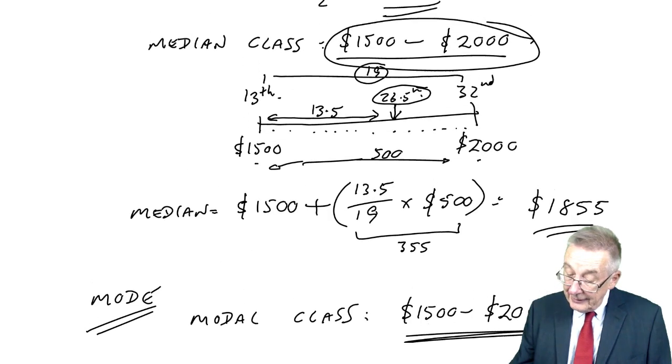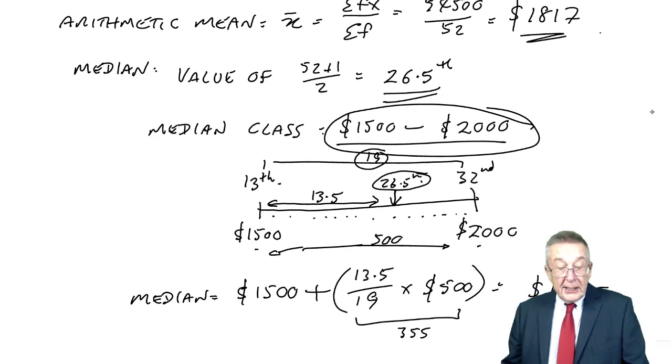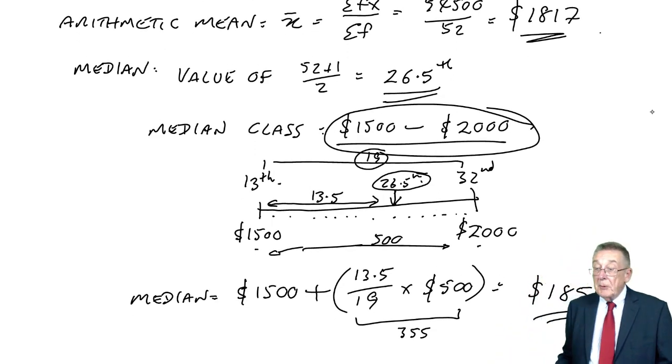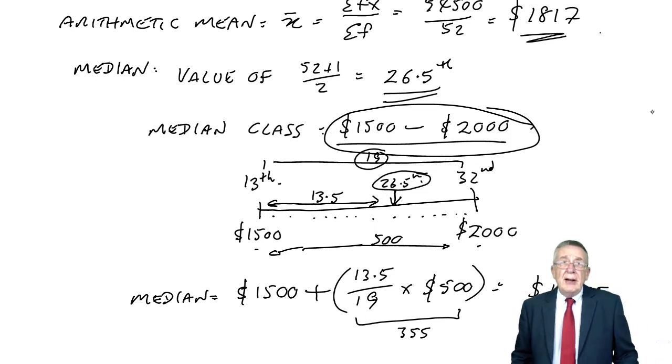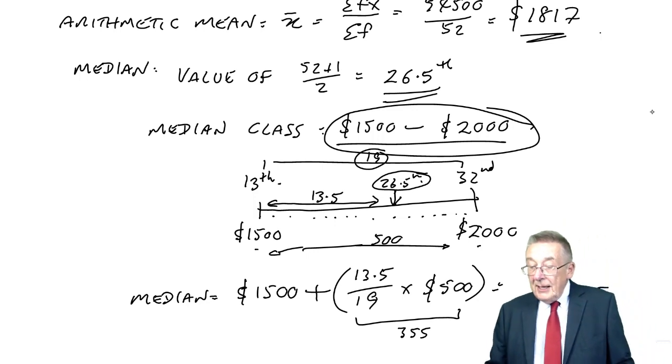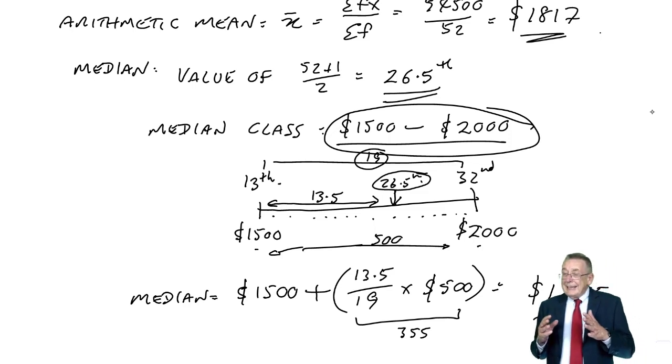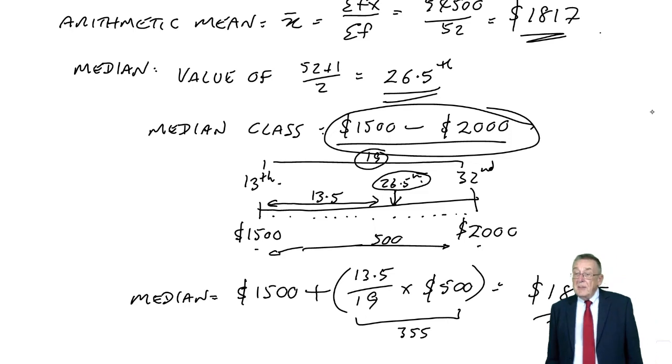Here we wouldn't be expected to put an actual value on it as we did with the median. The modal class is 1500 to 2000. The median is 1855. The arithmetic mean is 1817. Before I leave averages and turn to dispersion, as to why we've got three averages, in real life it very much depends what we want it for. The most logical average is the arithmetic mean. And certainly in further work later, in the rest of this chapter and the next one, it's the arithmetic mean that's important.